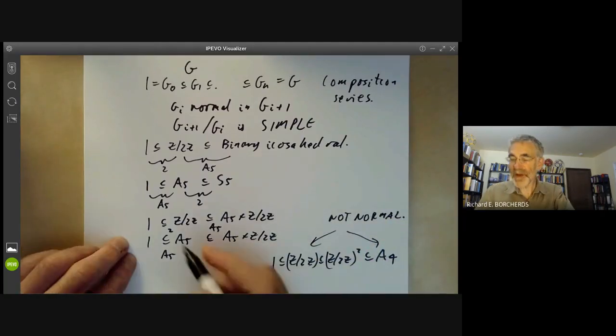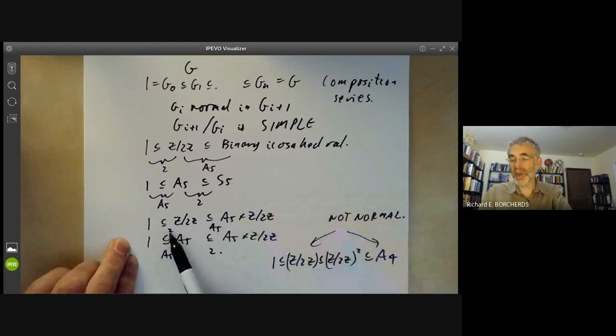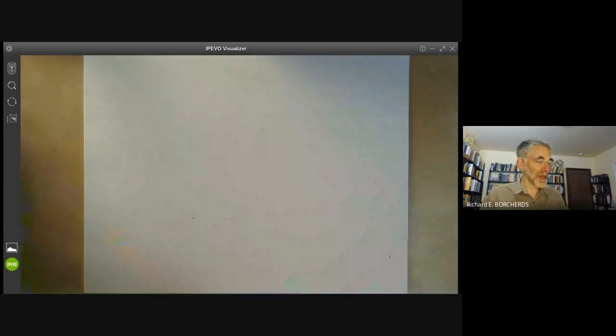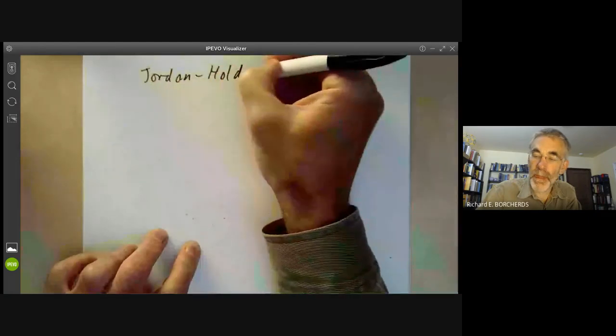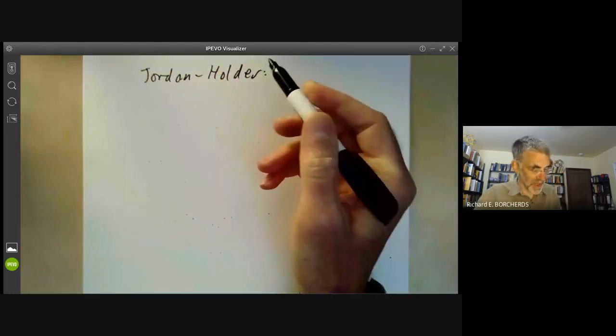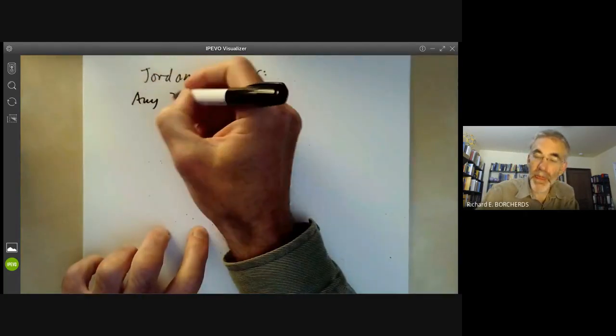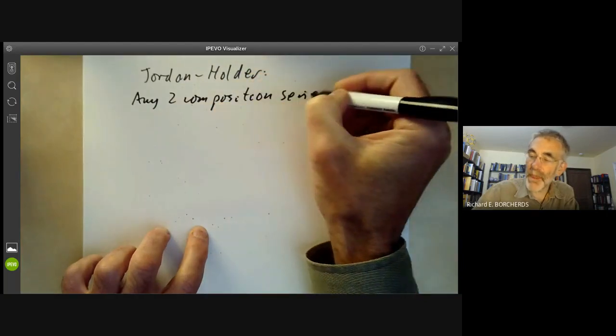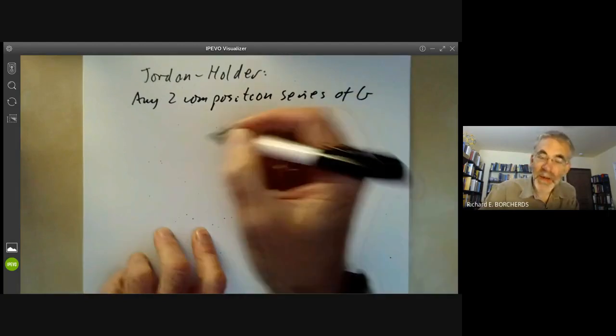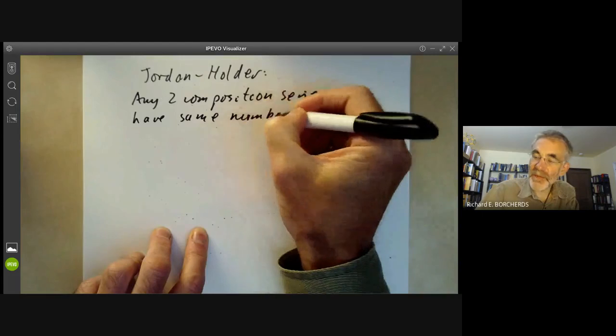So there's a lot of variation in the composition series. However, you see in this composition series, although the 2 and the A5 occur in a different order, they each both occur once. And this illustrates the Jordan-Holder theorem. So these were two 19th century group theorists, which says that any two composition series of a group G have the same number of each simple factor.